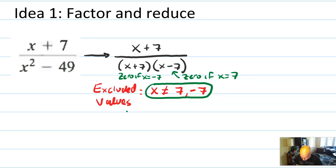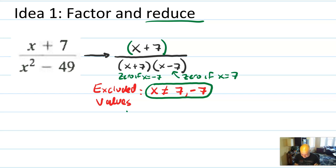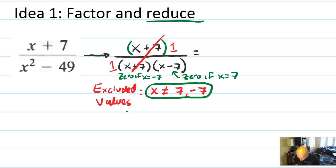Now I want to reduce this. I have an x plus 7 on the top and an x plus 7 on the bottom. Those reduce to 1. So x plus 7 over x plus 7 is basically 1 over 1, and we don't need to write the 1 on the bottom but we do need to write it on the top. This reduces to 1 over x minus 7 — that's our final answer.